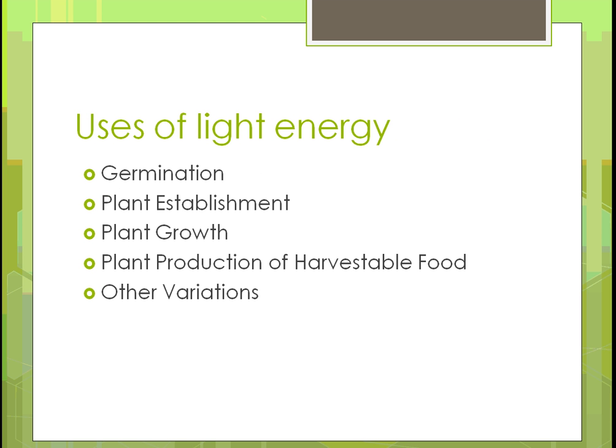Light energy is needed for germination — for seeds to start growing — and for plant establishment, where carbon dioxide is converted to sugars through photosynthesis. Once established, nutrients come up through the roots to support plant growth. With the right nutrients and light, the plant can produce a harvestable food — an ear of corn large enough to harvest, or a wheat stalk with enough grain — along with other variations affected by light energy.